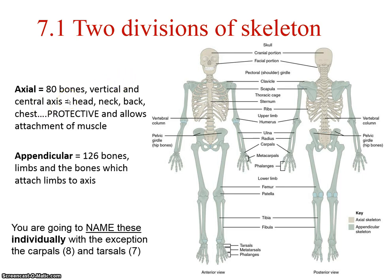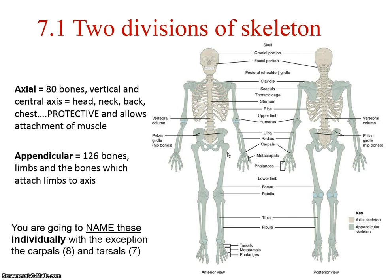Numbers aren't so important — there are more bones in the appendicular than the axial. The axial is the center area consisting of the head, neck, back, and chest, with broad areas that allow a lot of muscle attachment, especially on the ribcage and cranium surface. The appendicular is mostly long bones and short bones in the tarsals and carpals, and these are really support structures with muscles attached as well.